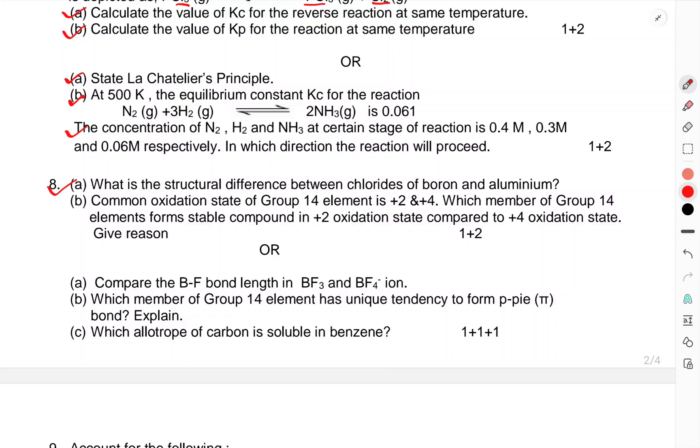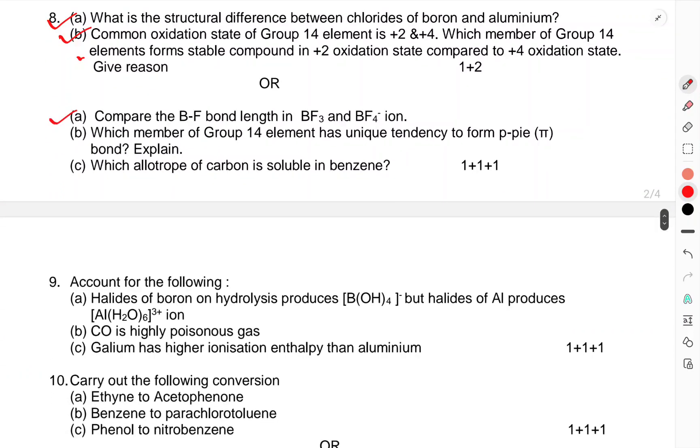What is the structural difference between the chlorides of boron and aluminum? Common oxidation state of group 14 element is +2 and +4. Which member of group 14 elements forms stable compound in +2 oxidation state compared to +4 oxidation state? Give reasons. OR: Compare the B-F bond length in BF3 and BF4 ion. Which member of group 14 element has unique tendency to form p-pi p-pi bond? Explain. Which allotrope of carbon is soluble in benzene?